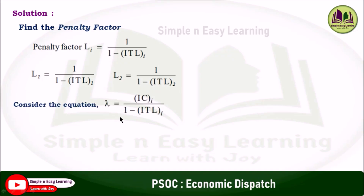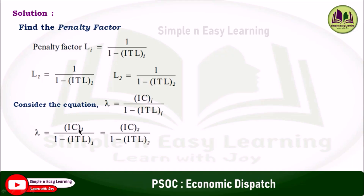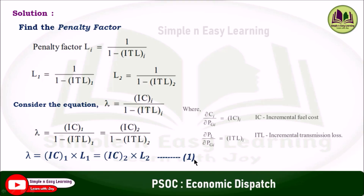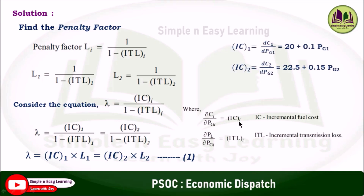Consider the lambda equation derived in economic dispatch considering losses: λ = IC / (1 − ITL_i), where IC is incremental cost and ITL is incremental transmission loss. This gives λ = IC1 / (1 − ITL_1) = IC2 / (1 − ITL_2). Substituting the penalty factor: λ = IC1 · L1 = IC2 · L2. Take this as equation 1.